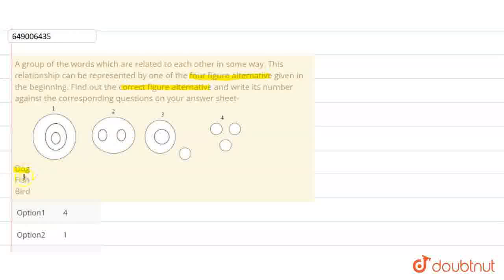We have given some words here: dog, fish and bird. The question asks us which Venn diagram represents the correct relationship between these three words.